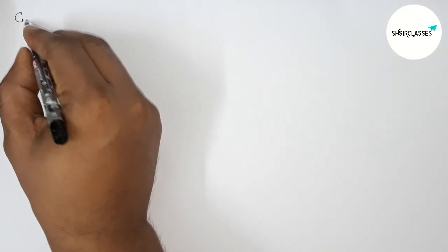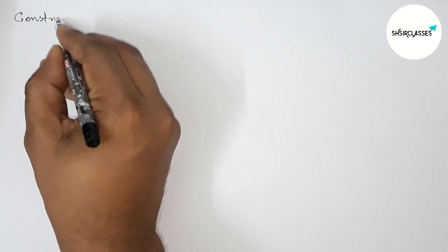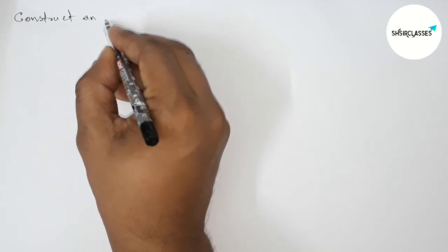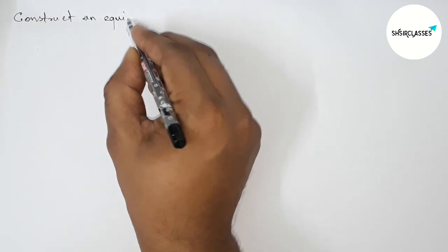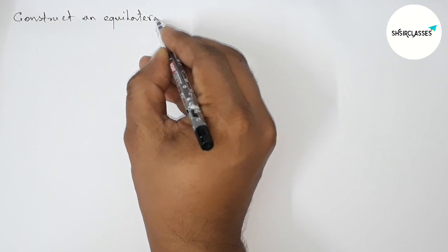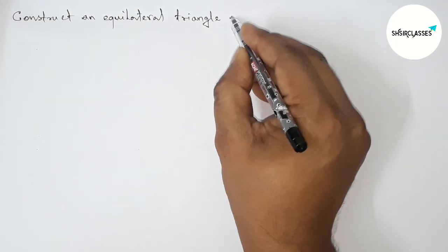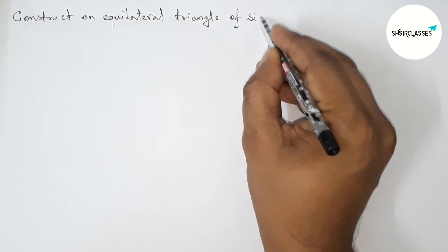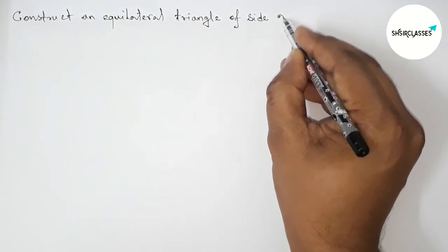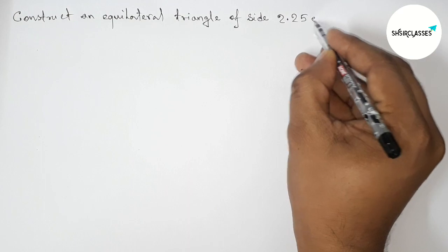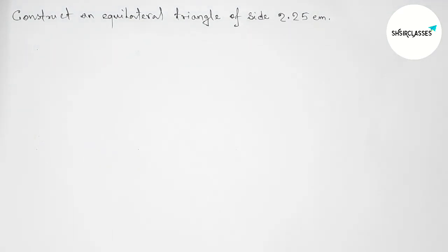Hi everyone, welcome to Essay Share Classes. Today in this video we have to construct an equilateral triangle of each side 2.25 centimeter in an easy way. So please watch the video till the end. So let's start the video.